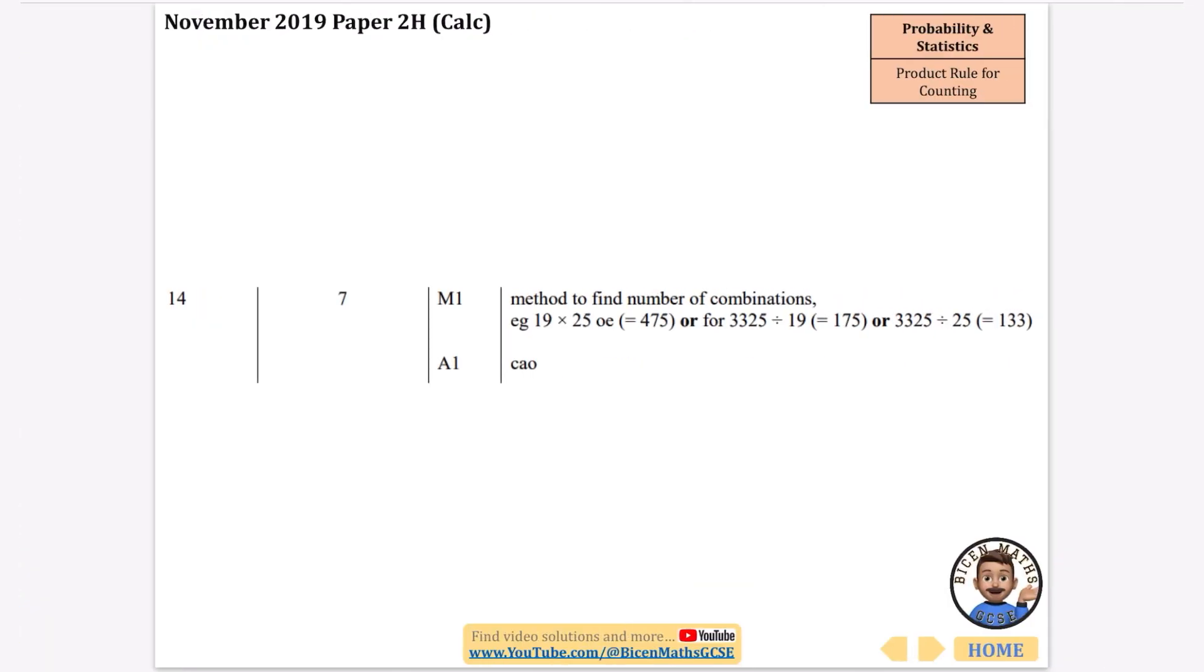Let's see if we've got it right. There is the seven that we've got there and you can see that process of dividing by 19 and then dividing by 25.